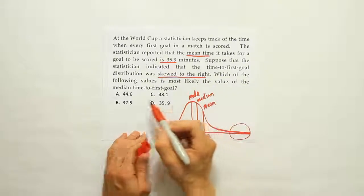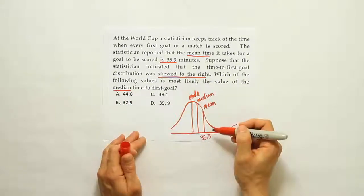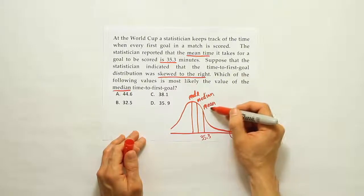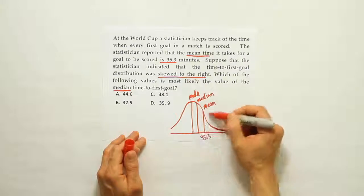So if they ask which value is most likely the median, then we have to think to ourselves, well, going through the drawing here, the median should be less than the mean, right? So it should be a number that's below the mean.